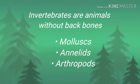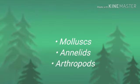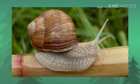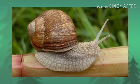Molluscs are animals with a soft body. They use a muscular foot to move around. Some of them have shells. Some examples are slugs, snails, and octopus.